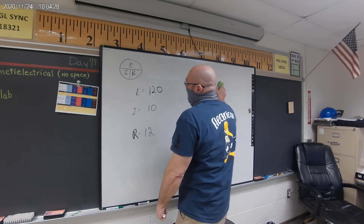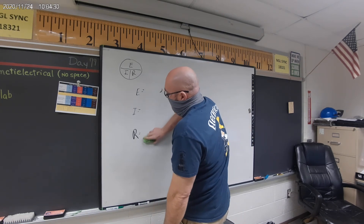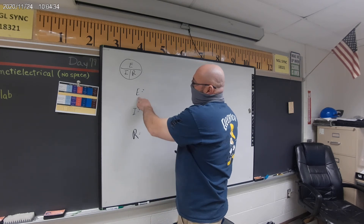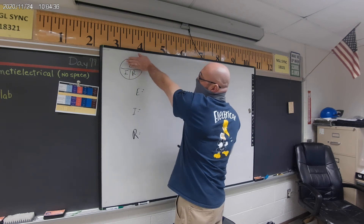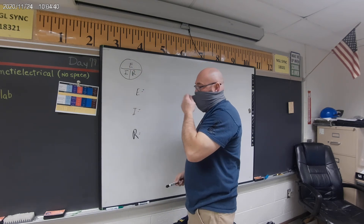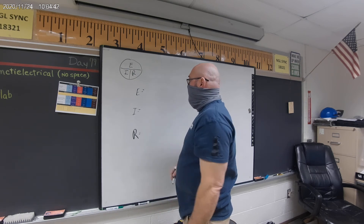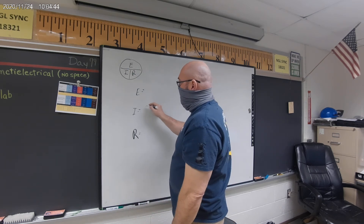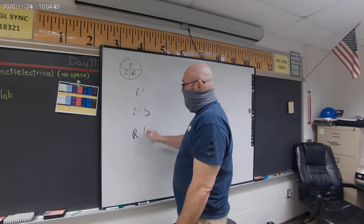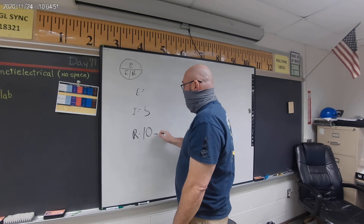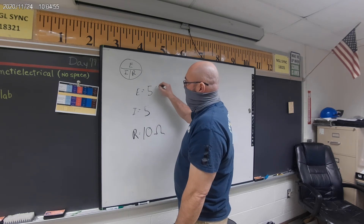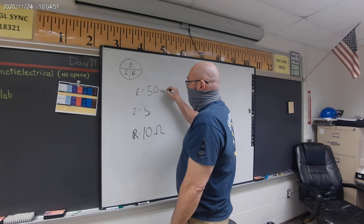And then finally the easiest one. I am trying to find the voltage. It is going to be the amperage times the resistance. So let's pick 5 amps and the resistance is 10 ohms. 5 times 10 — the voltage is going to be 50 volts.